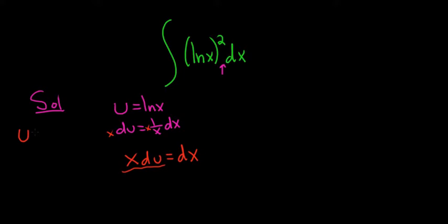However, we know that u is equal to the natural log of x. So we can solve this for x by exponentiating both sides. So we'll put an e here and put an e here.